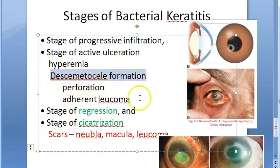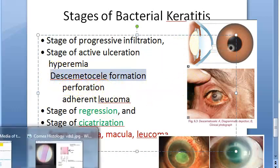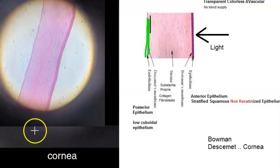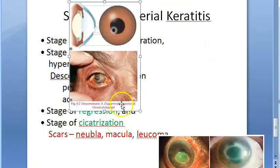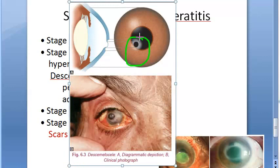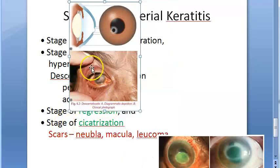Descemetocele formation will be present. Descemet's membrane is just before the endothelium, and it can get involved — appearing as a very thin line. This is a Descemetocele seen in active ulceration.